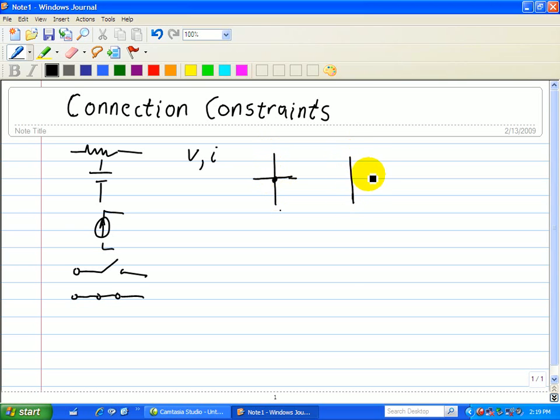If there's no solid dot, that means the wires are not connected. Two wires with a solid dot in the middle means they're connected. Alternatively, I can draw wires without a dot to show they are not connected.